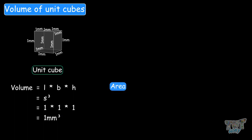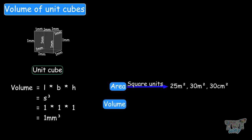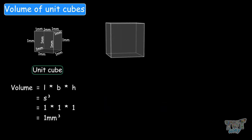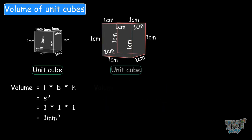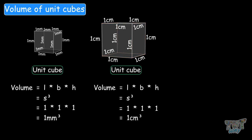Whenever you find the area, the unit is squared units. For example, you say 25 meters squared, 30 meters squared, 30 centimeters squared. Likewise, in the case of volume, the unit is cubed. You say 1 mm cubed or 10 centimeters cubed. So we just calculated the volume of a cube whose side is 1 mm. Now we will find the volume of a cube whose side is 1 cm — it will be side cubed: 1 times 1 times 1, so 1 centimeter cubed.